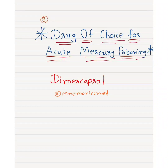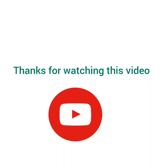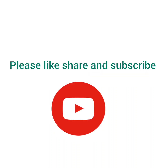The drug of choice for chronic mercury poisoning is N-acetyl penicillamine. Remember N-acetyl penicillamine for chronic mercury poisoning. Thanks for watching this video — please like, share, and subscribe to our YouTube channel.